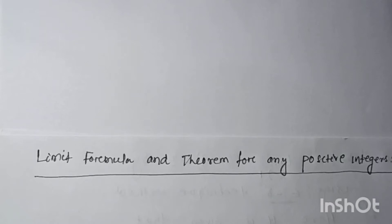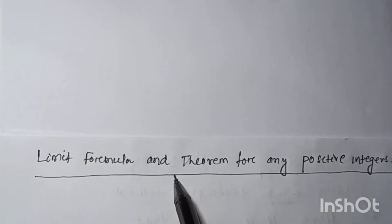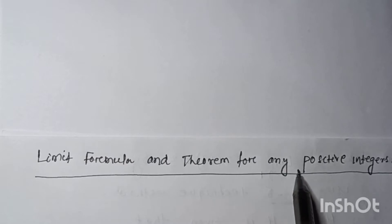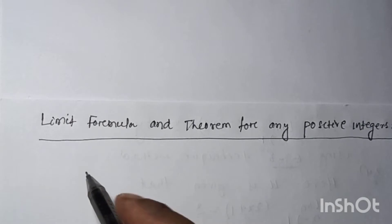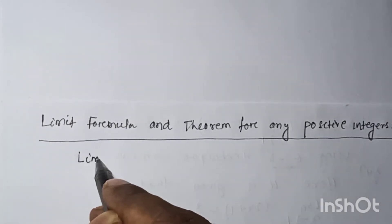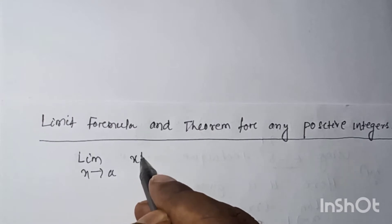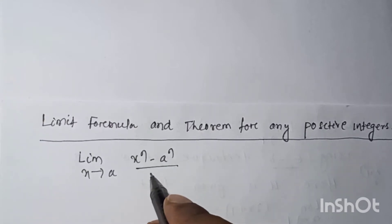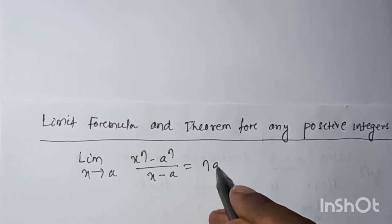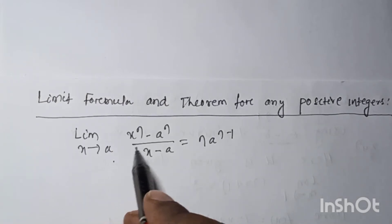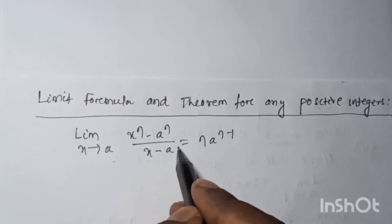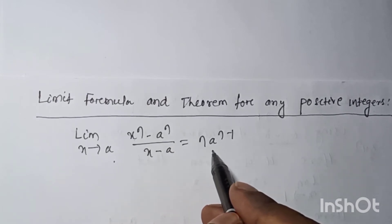Hello friends, welcome to my channel. Today we will discuss the limit formula and theorem for any positive integers. The given limit: as x tends to a, (x^n - a^n) / (x - a) is equal to n·a^(n-1). So we have to prove: limit x tends to a of (x^n - a^n) / (x - a) = n·a^(n-1).